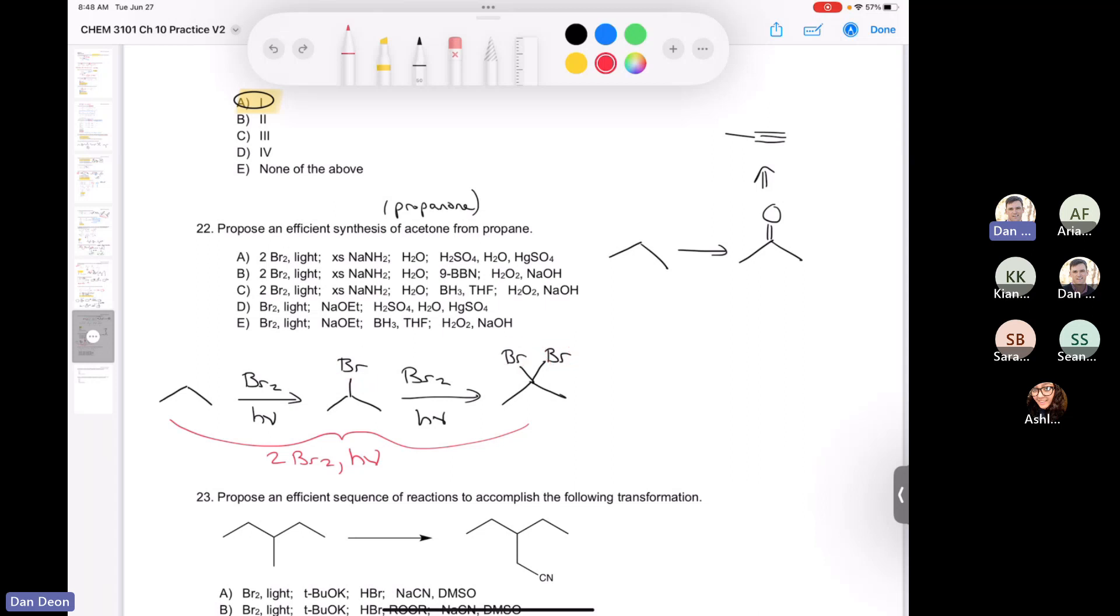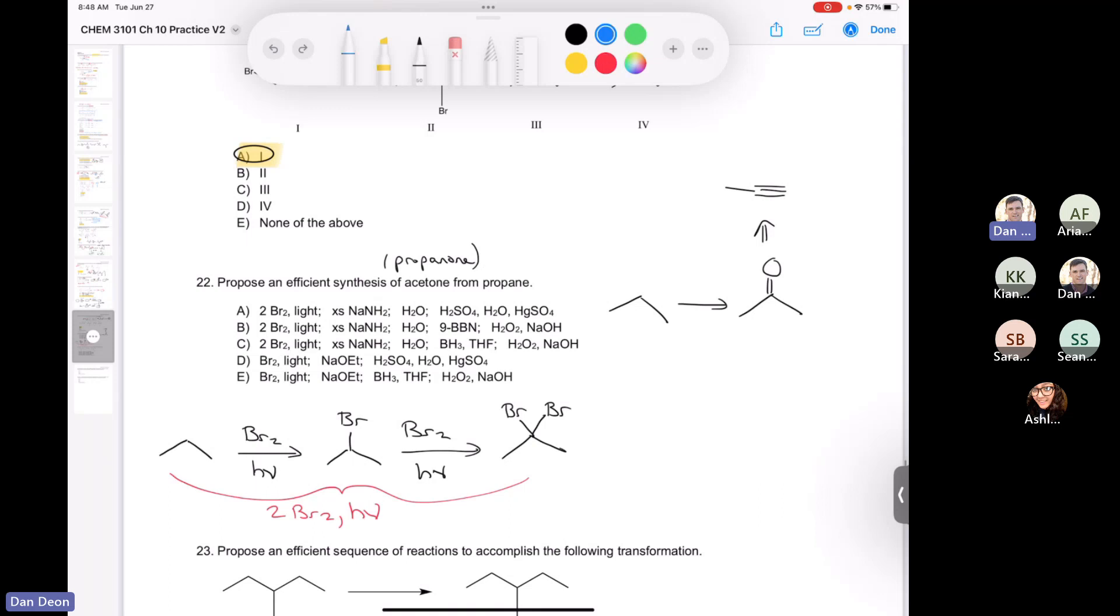Now the reason why we have to add two bromines to the molecule, to our propane, is because we know that the only way that we could make this carbonyl, this ketone, is from propyne. If we did a Markovnikov addition of water across propyne, then we make the enol which tautomerizes to give us the ketone.